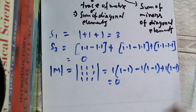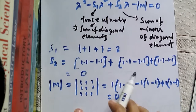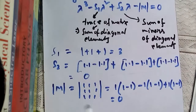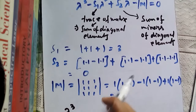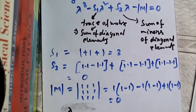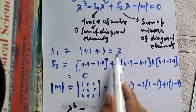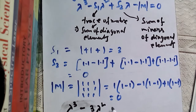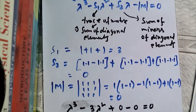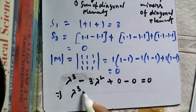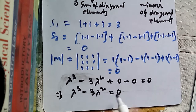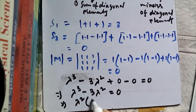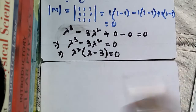We now substitute into the characteristic polynomial: lambda³ minus S1·lambda² plus S2·lambda minus det(M) = 0, giving lambda³ minus 3·lambda² plus 0 minus 0 = 0, which simplifies to lambda³ minus 3·lambda² = 0. Taking lambda² as common: lambda²(lambda minus 3) = 0.